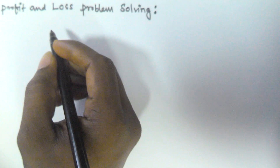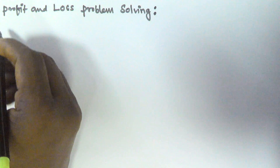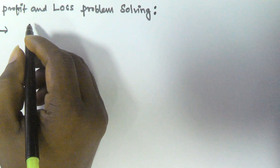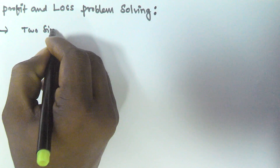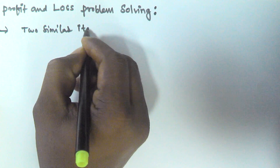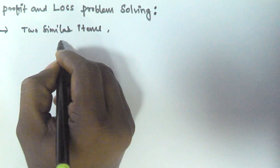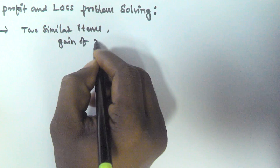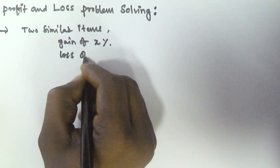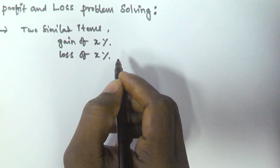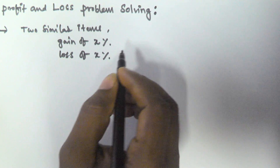Hello friends, in this video we will see some problems related to profit and loss. For example, if a person sells two similar items — one item at a gain of x percentage and another item at a loss of x percentage — then the seller always incurs a loss.